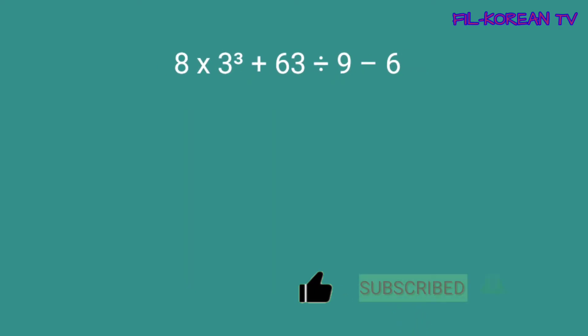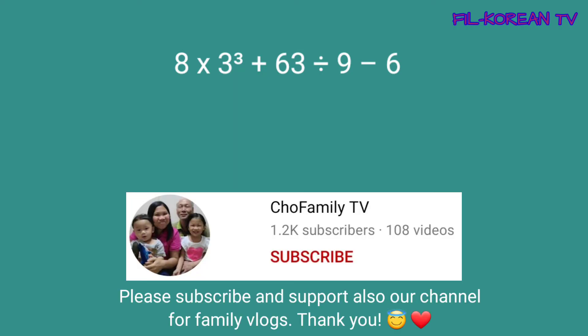Another example, 8 times 3 to the 3rd power plus 63 divided by 9 minus 6. Dito, walang grouping symbols. Pero, merong exponent. Kaya, yung una natin gagawin ay kukunin natin ang value ng number na may exponent. Itong 3 to the 3rd power. Ibig sabihin ito, imultiply natin ang 3 ng tatlong ulit sa kanyang sarili. 3 times 3 times 3 equals 27. Ang value ng 3 to the 3rd power ay 27. Kaya, magiging ganito yung ating answer.